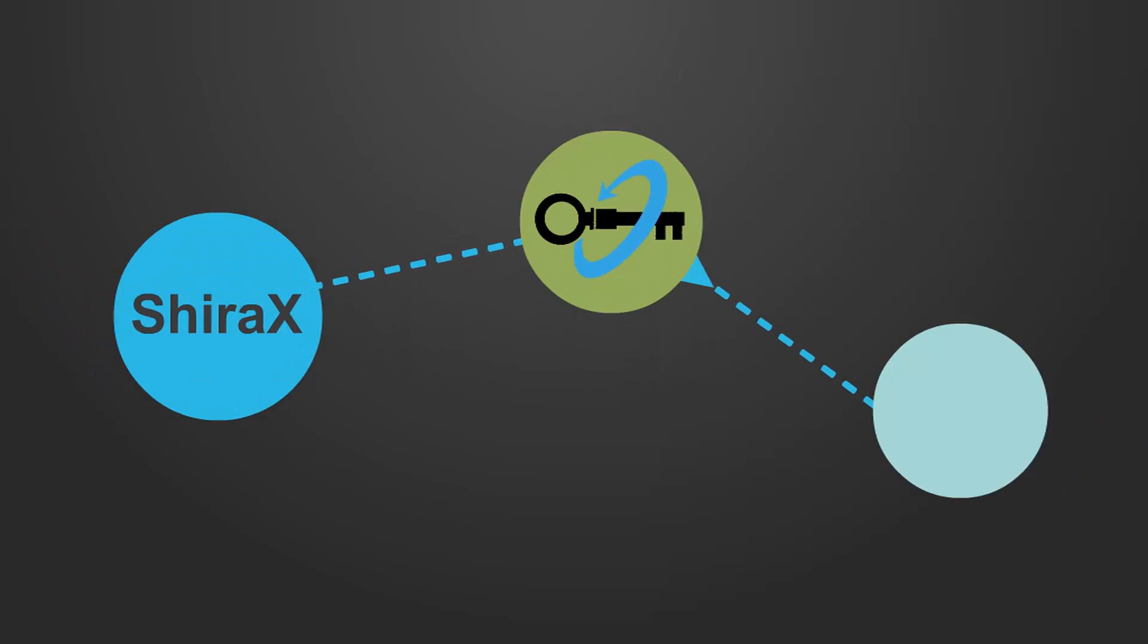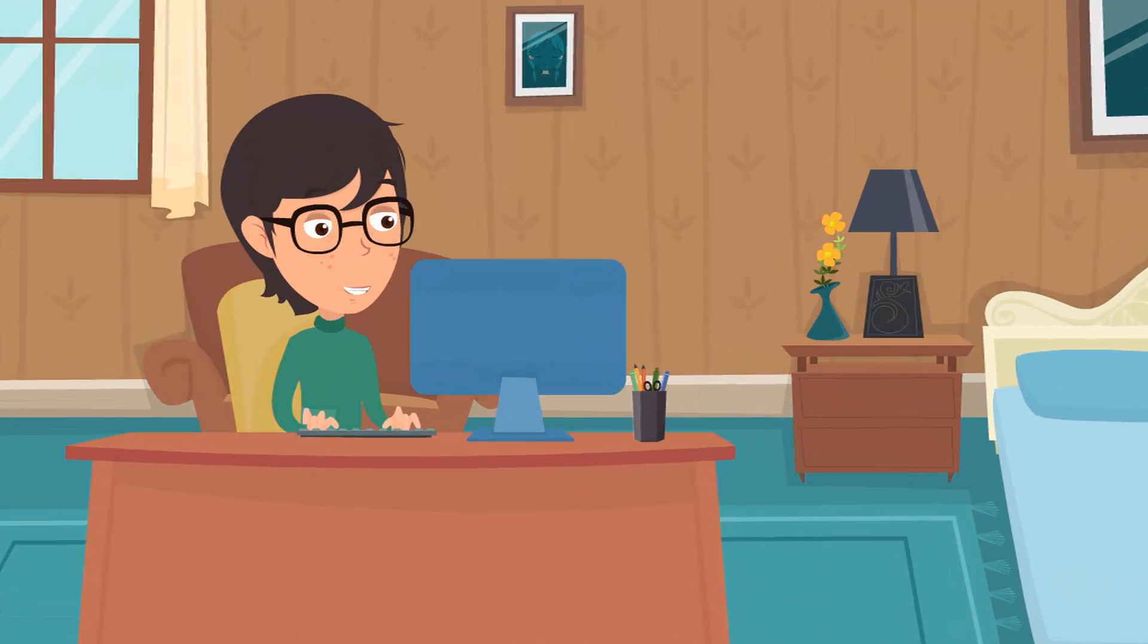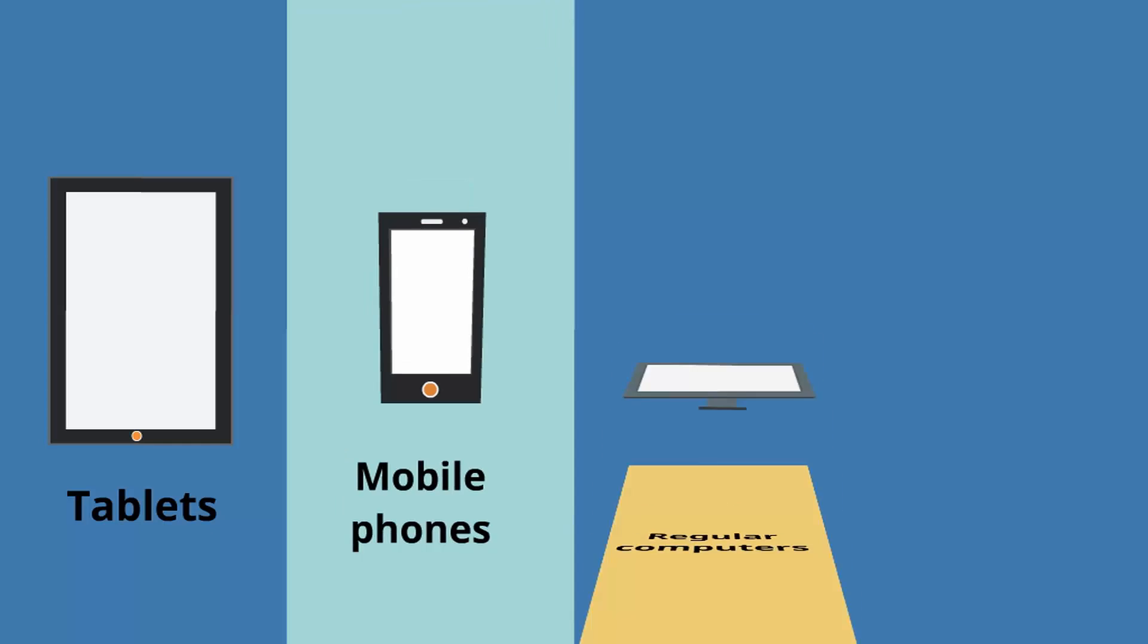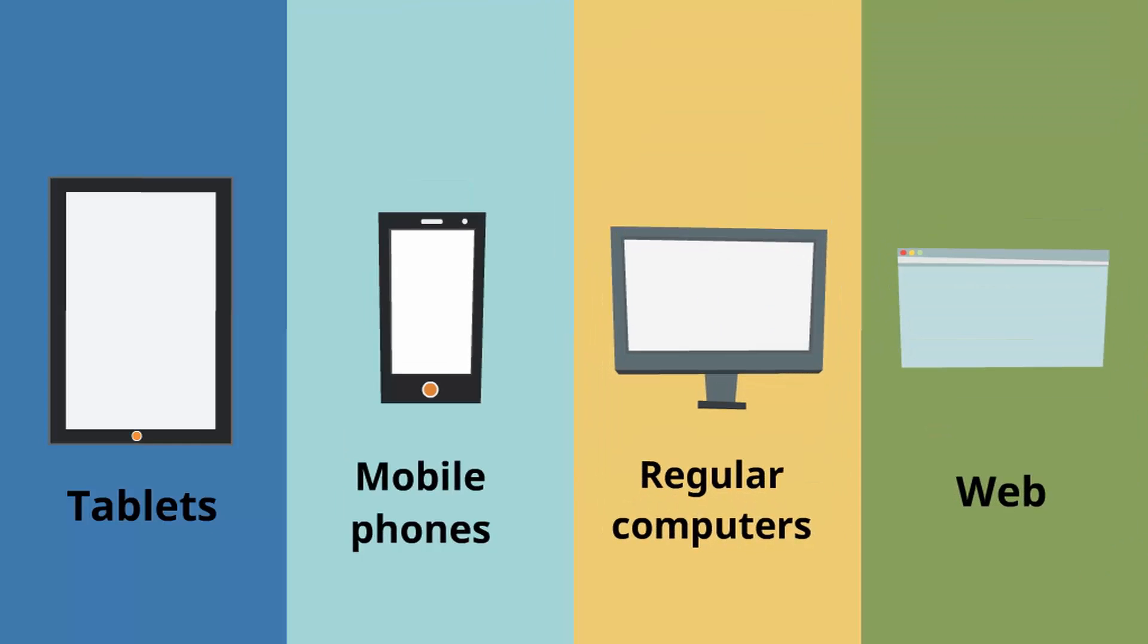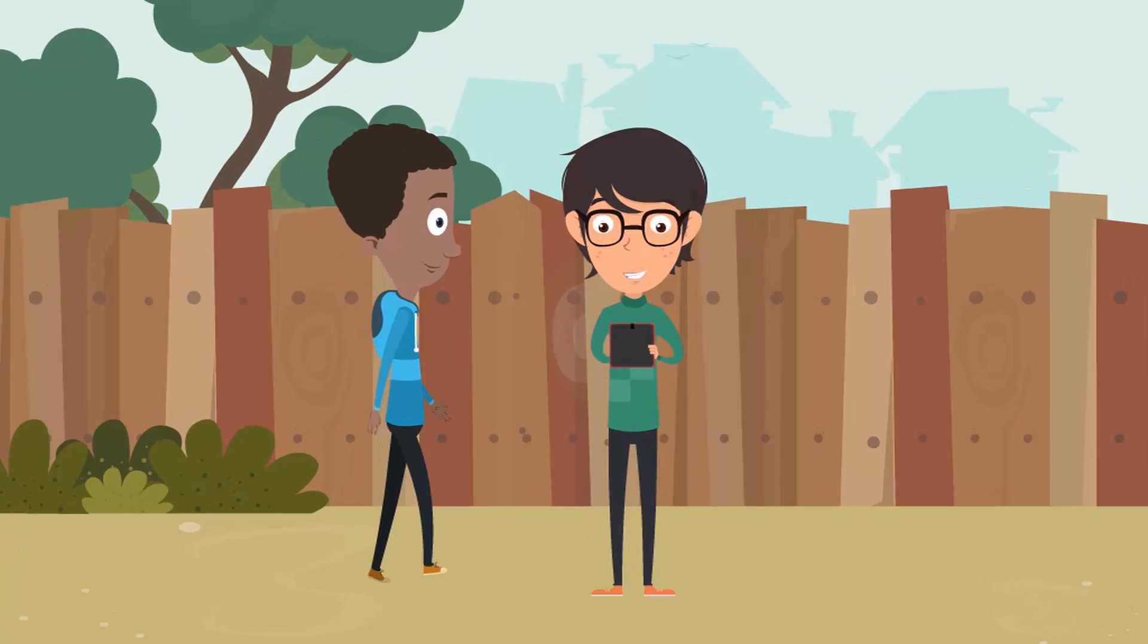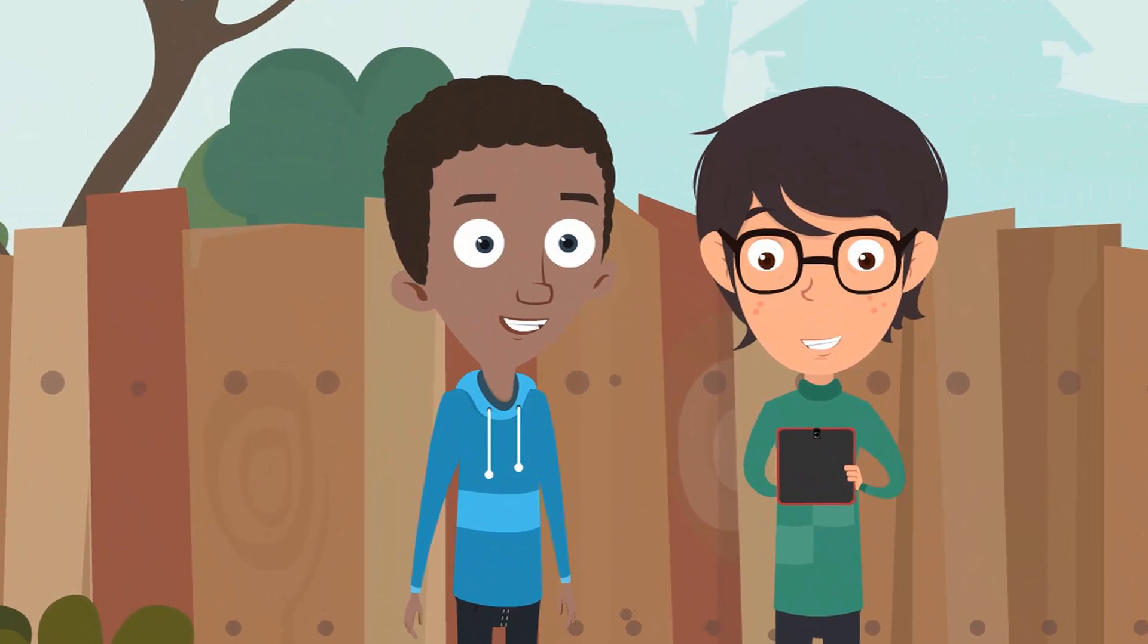ShiraX is a turnkey AI platform that will allow anyone to create self-teaching, personally engaging educational apps for tablets, mobile phones, regular computers, or the web. The app's built-in artificial intelligence interacts with the child's environment and also engages their friends, collectively educating everyone.